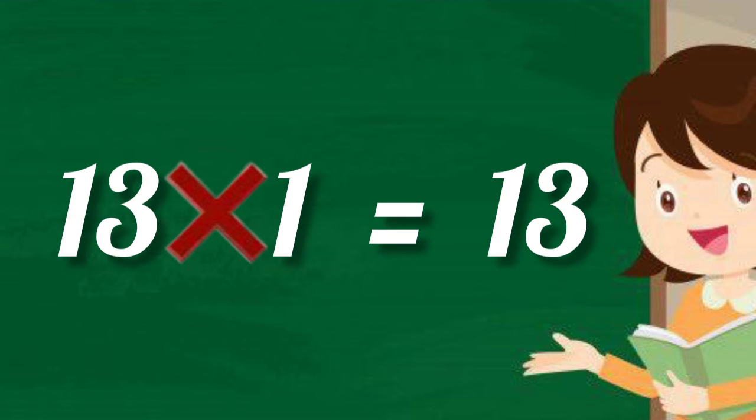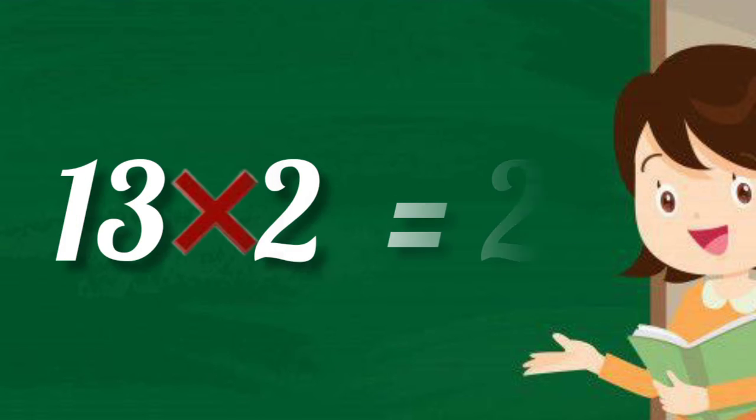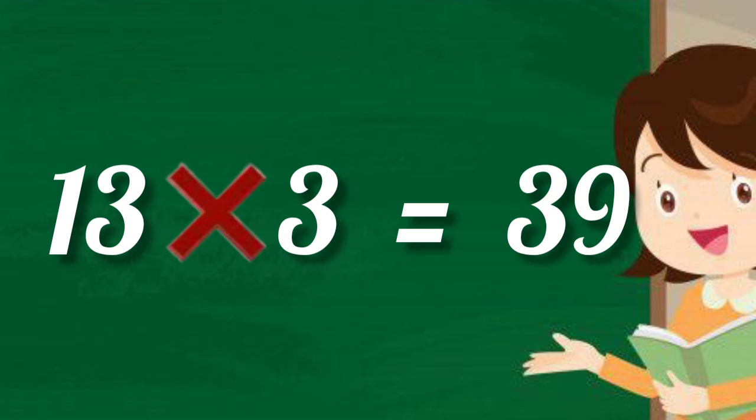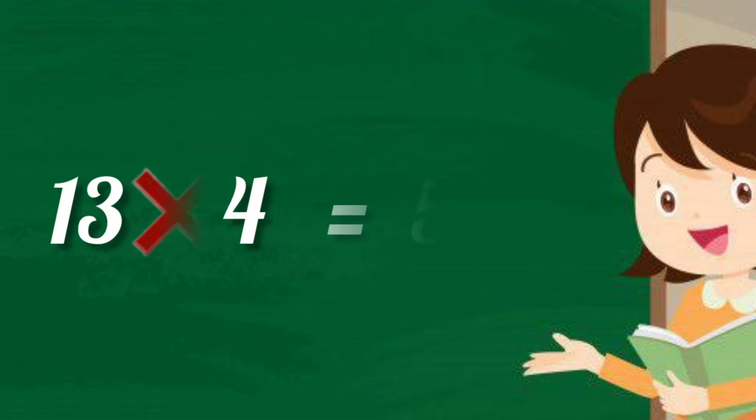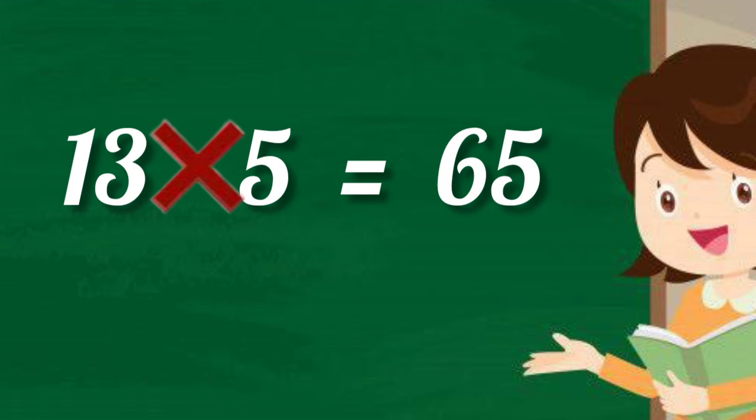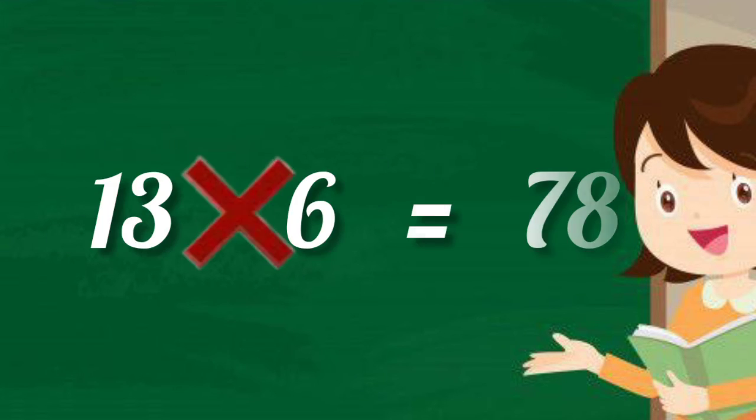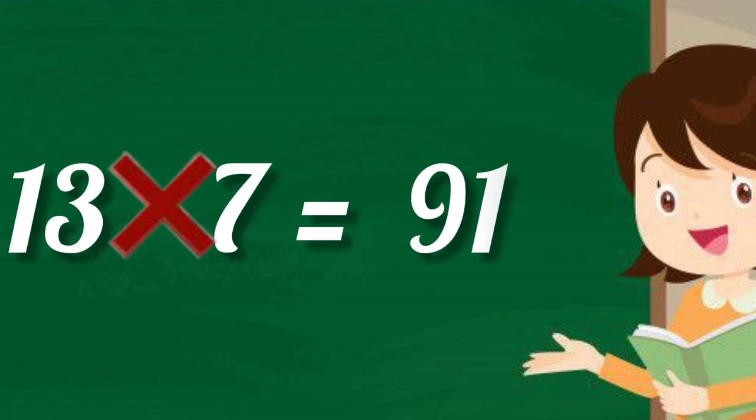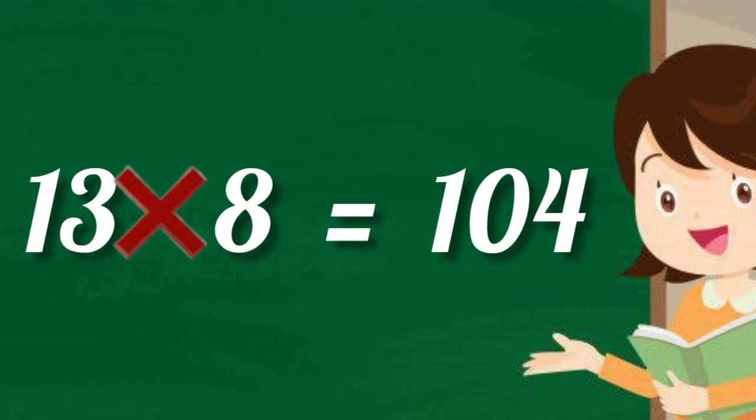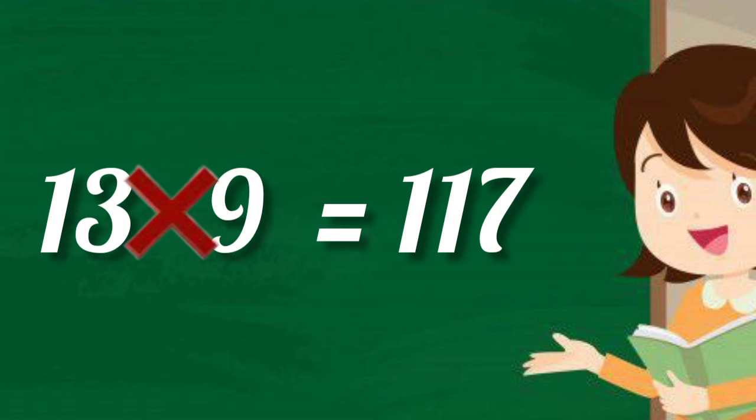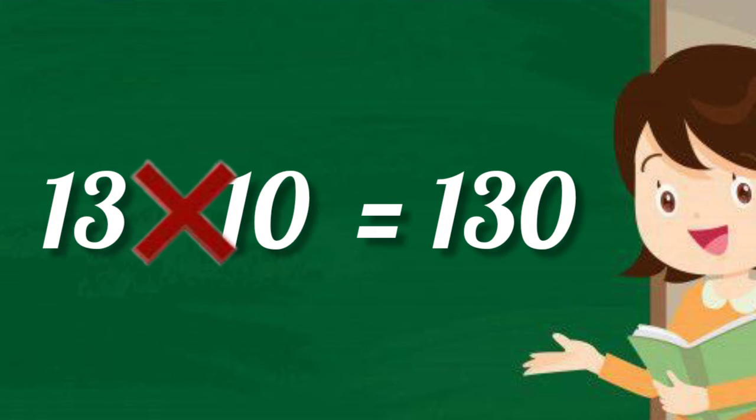13 ones are 13, 13 twos are 26, 13 threes are 39, 13 fours are 52, 13 fives are 65, 13 sixes are 78, 13 sevens are 91, 13 eights are 104, 13 nines are 117, 13 tens are 130.